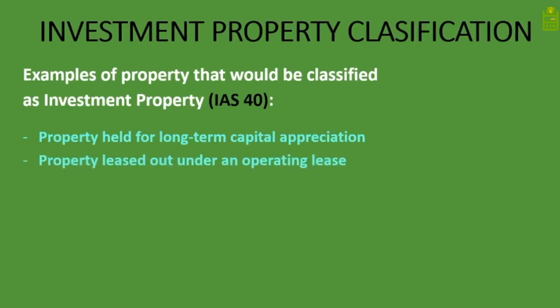If ABC Limited leases out a property to others under an operating lease, they classify it as investment property because they receive rental income. However, if ABC Limited leases out a building under a finance lease, they will not classify it as investment property — it must be an operating lease. If the type of lease is not specified, it is most likely an operating lease unless stated otherwise.